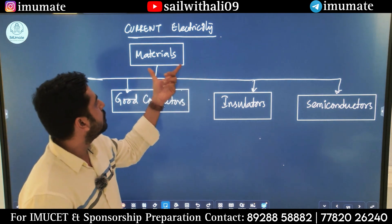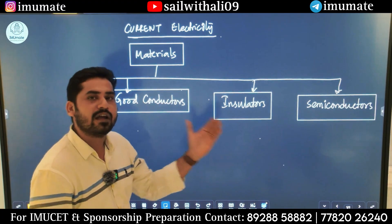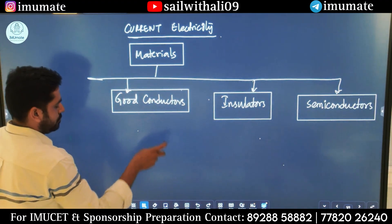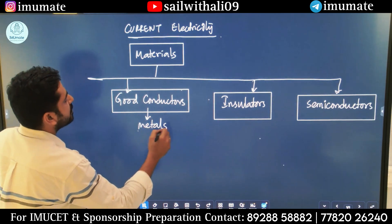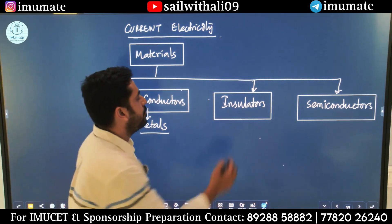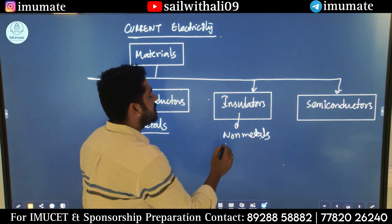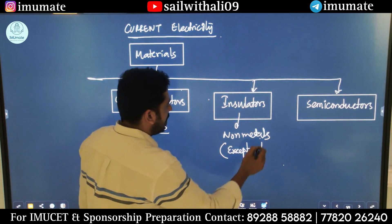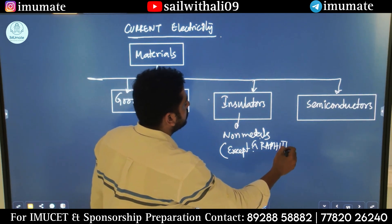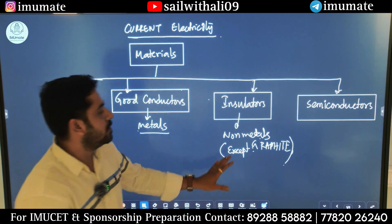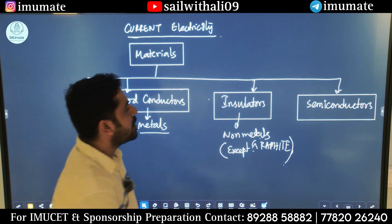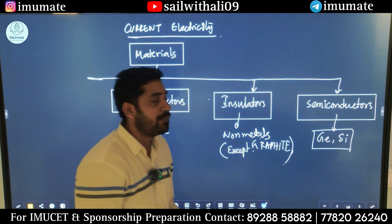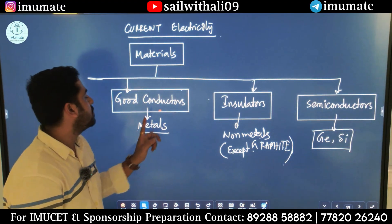I have already divided materials into different segments according to their conductivity. For example, good conductors — good conductors means mostly metals. So metals are good conductors of electricity. Now we have insulators, basically non-metals. There are some exceptions: graphite, basically carbon. Carbon is a good conductor of electricity, but that is also a non-metal. We also know about semiconductors like germanium and silicon. They also conduct electricity, but in lesser amount compared to good conductors, which are metals.